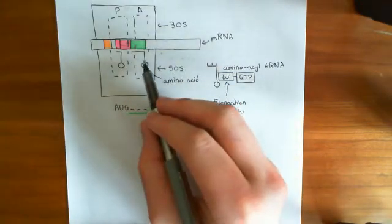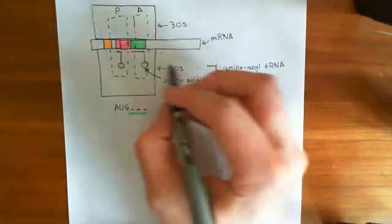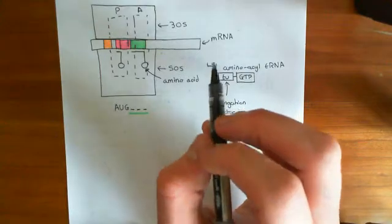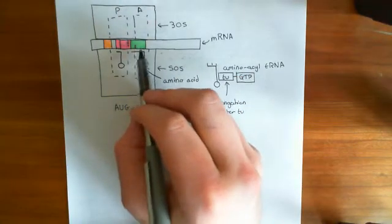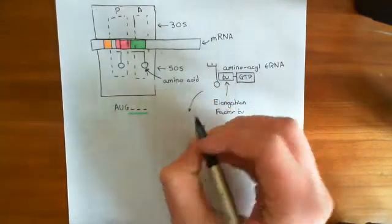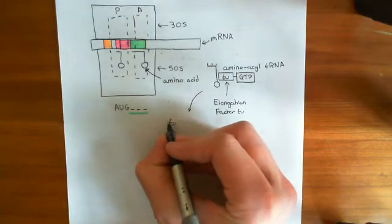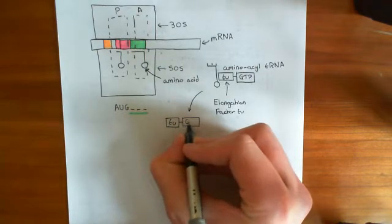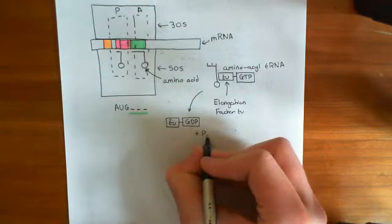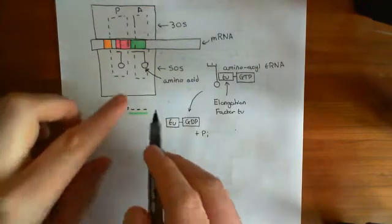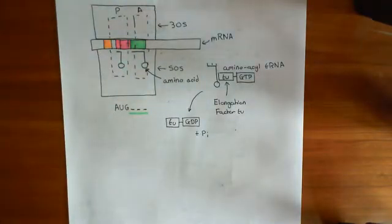That is the function of elongation factor TU bound to GTP: it delivers the aminoacyl-tRNA into the A site. Once the aminoacyl-tRNA is in the A site and it has been verified that the anticodon really does match the codon of the mRNA, the elongation factor TU breaks off. In order to break off, the GTP is hydrolyzed to GDP, and the elongation factor TU bound to GDP cleaves off from the aminoacyl-tRNA, leaving it in the A site.